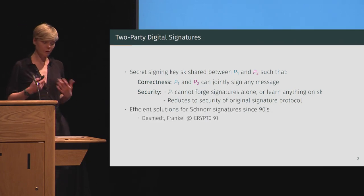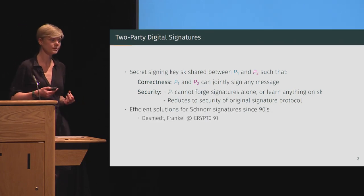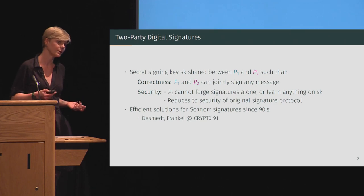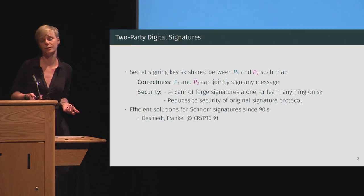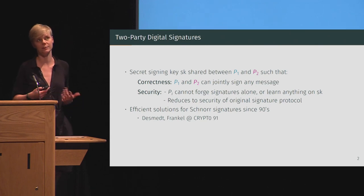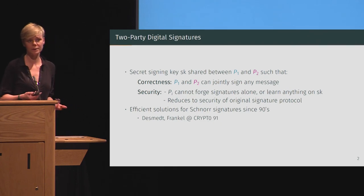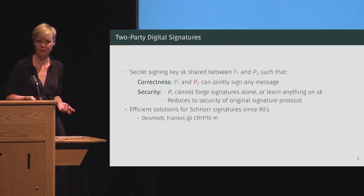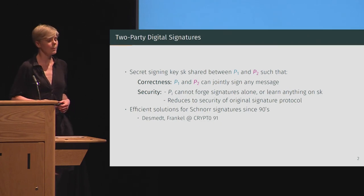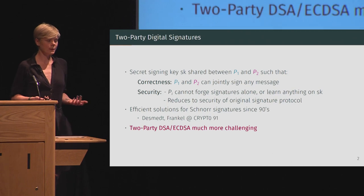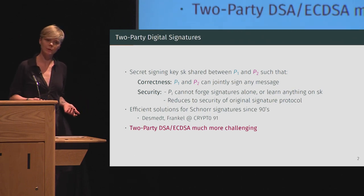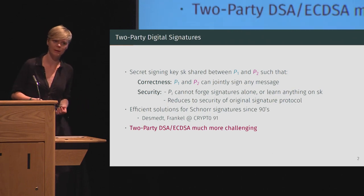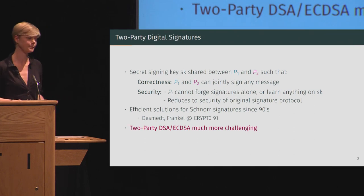For other signature algorithms, efficient solutions have been around for a long time. In particular, for Schnorr algorithms, whose elliptic curve variant is very similar to eCDSA, efficient solutions have been around since the 90s. But devising a two-party eCDSA scheme has proved much more challenging.